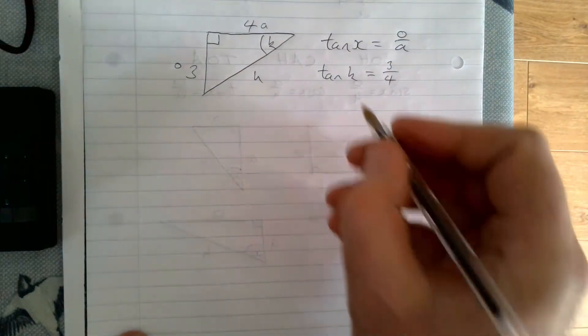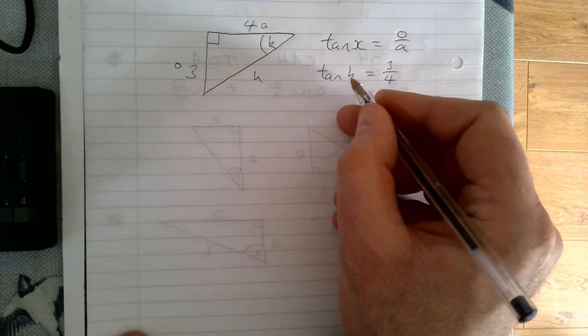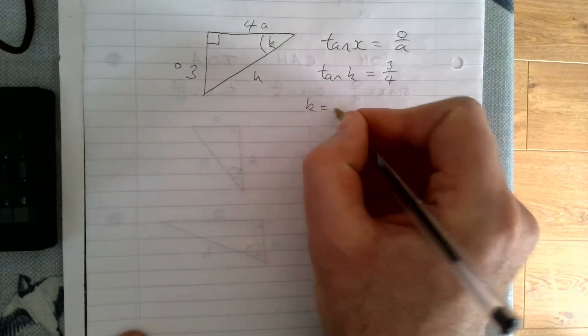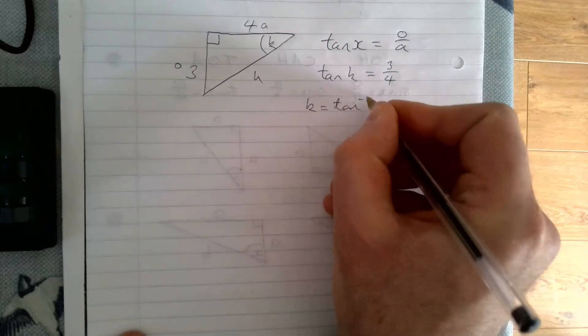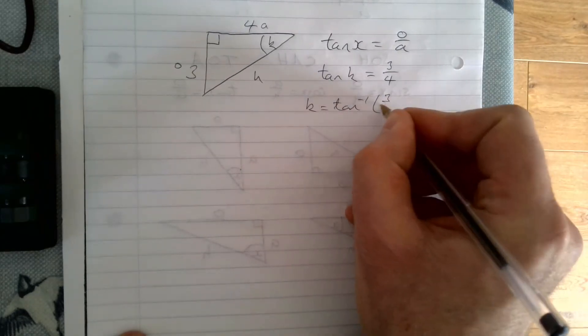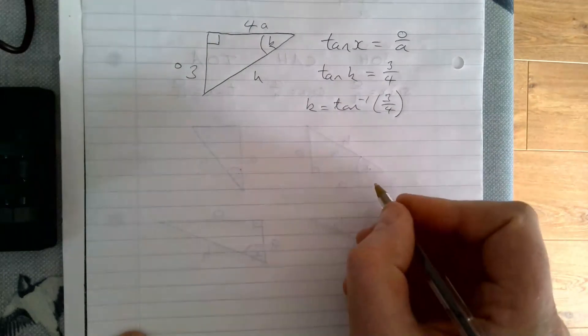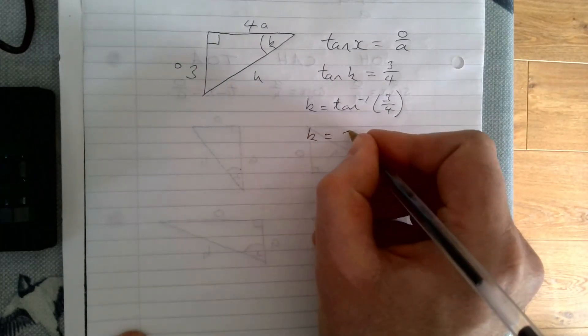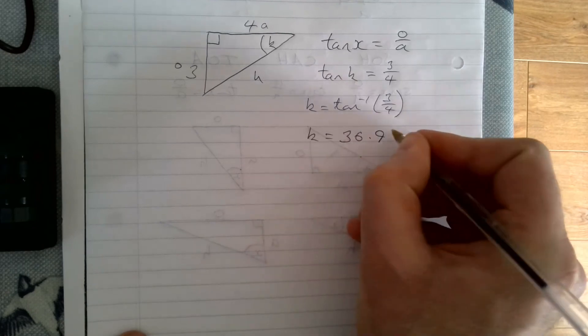This next bit's a little bit unusual. We're going to take inverse tan, so on your calculator you're going to hit the shift button. So K equals tan to the minus one, 3 over 4. You type this into your calculator and you get an angle of I think 36.9 degrees.